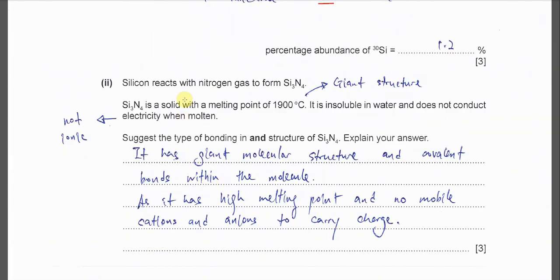Part 2: Silicon reacts with nitrogen gas to form Si3N4. Si3N4 is a solid with a melting point of 1900. This is considered very high temperature, so we know that this compound must have giant structure. And it is insoluble in water and does not conduct electricity when molten, so we know this one is giant and is not ionic. So it's very clear this must be giant molecular.